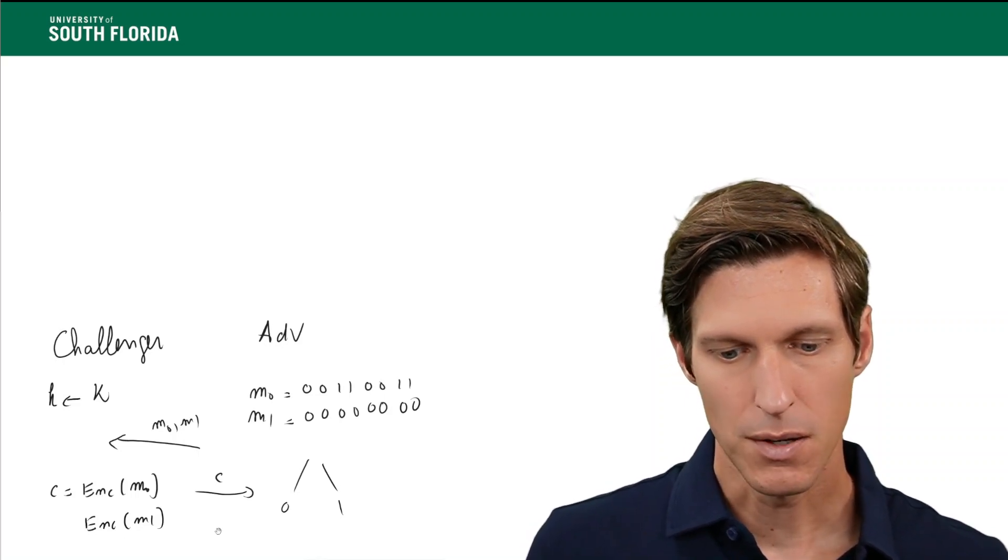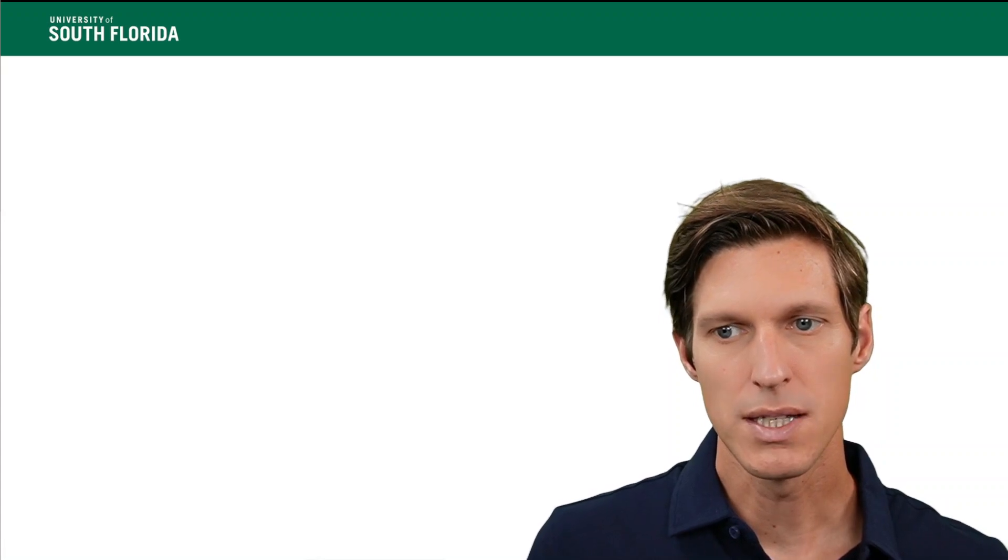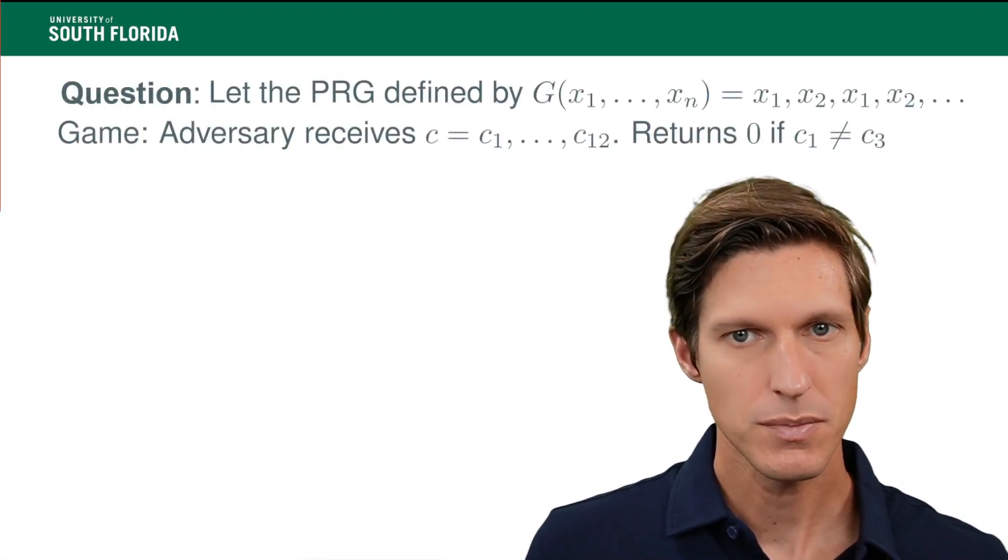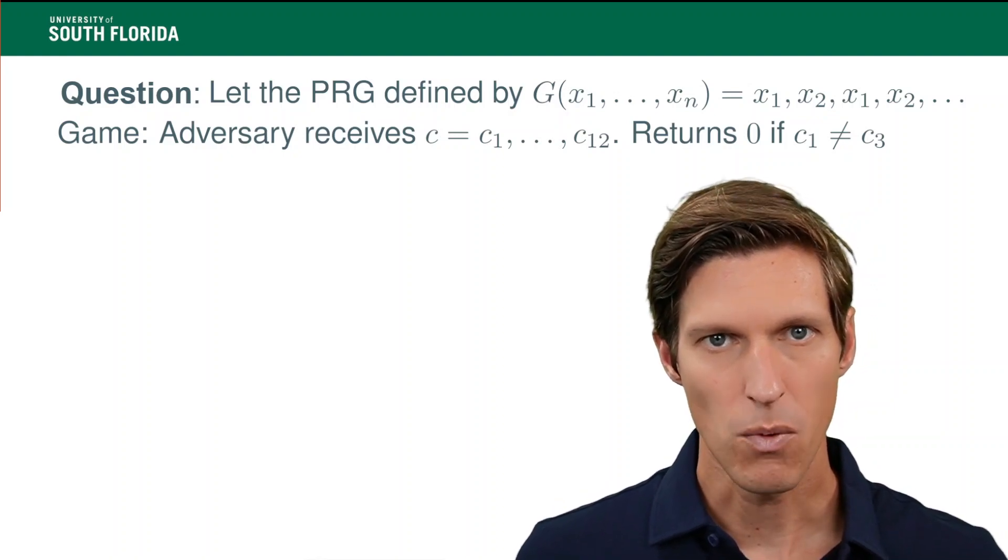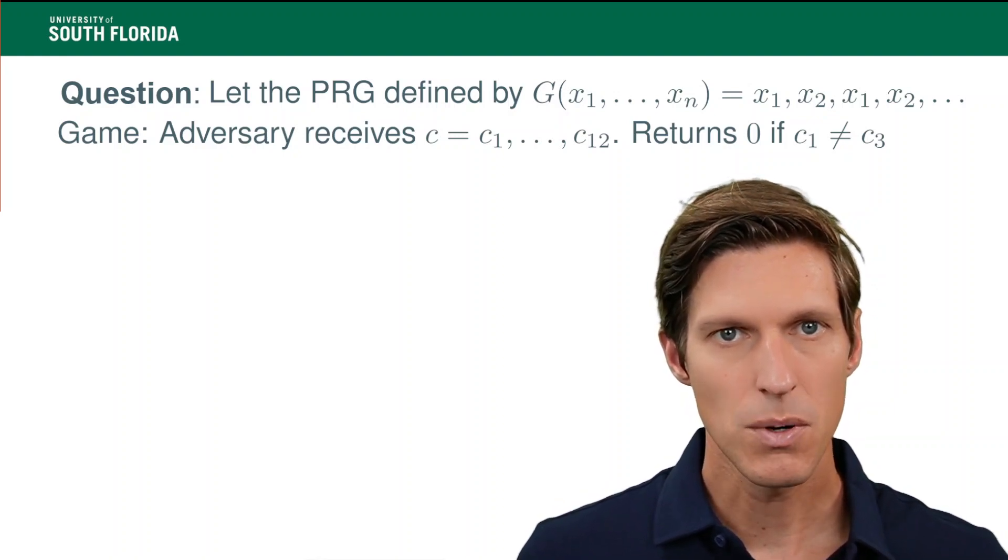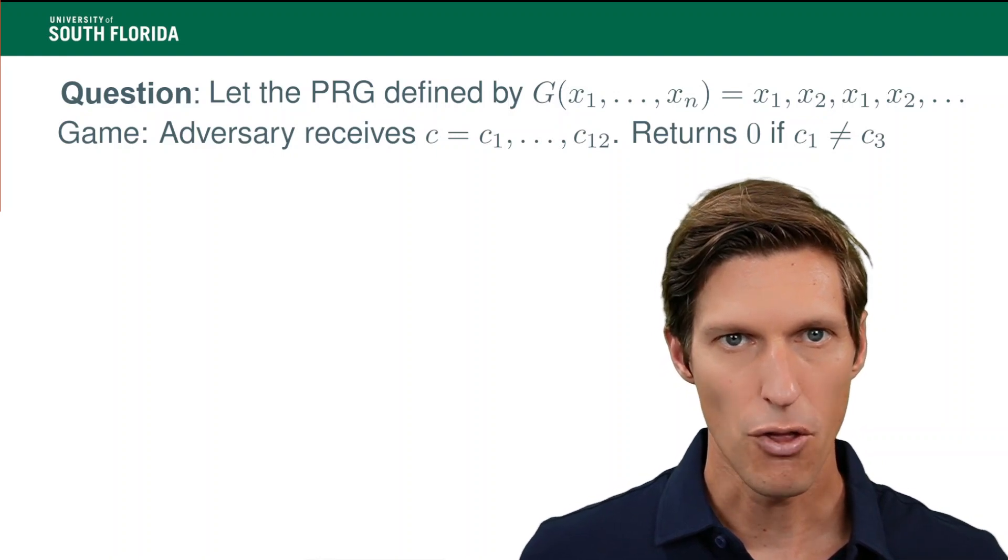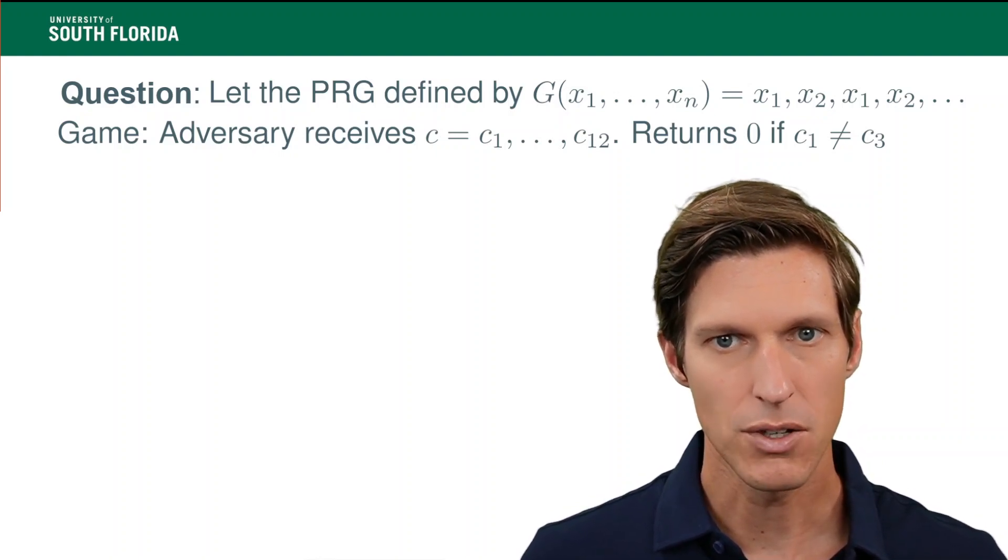So with that in mind, I will proceed to show what's the definition of the adversary. So here we have an adversary that looks at the ciphertext that arrives their way and outputs 0 if the first and the third bit of the ciphertext are different.